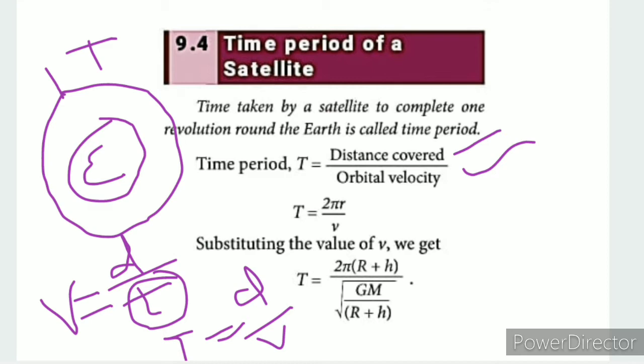The distance is the circle. The circle is the circumference. We call it 2πr. This is the orbital velocity, V.